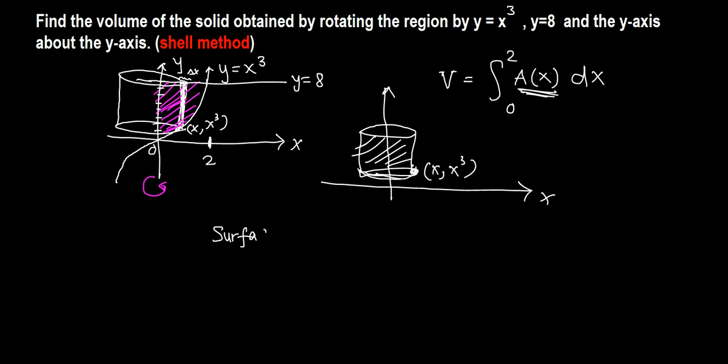We need to find the surface area of the cylinder, which is A in our formula. The surface area of the shell is A in terms of x equals 2 pi r h, 2 pi radius times height. The radius is x, and this is the height.